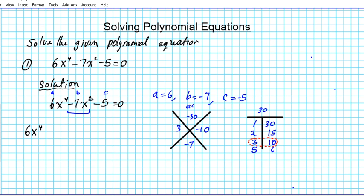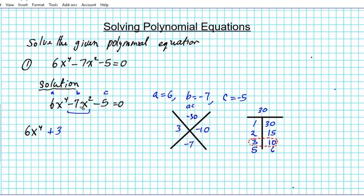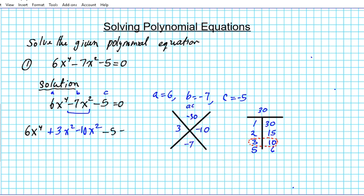Now notice that this is a second degree term. So we're going to attach that x^2 component to the two numbers when we're inserting it. So we have +3x^2 preserving that degree -10x^2 -5 = 0. Alright, now we have four terms.